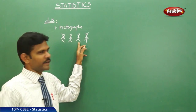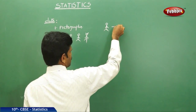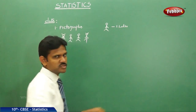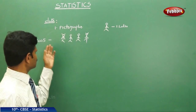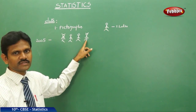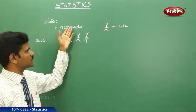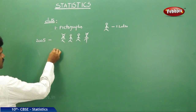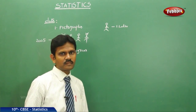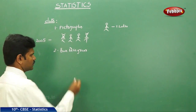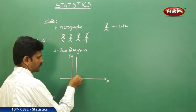For example, this is the girl diagram and this is the boy diagram. Suppose each diagram represents one lakh. In 2005, the birth rate of girls is around two lakhs and the birth rate of boys is around two lakhs. Representing data using pictures like this is called a pictograph.